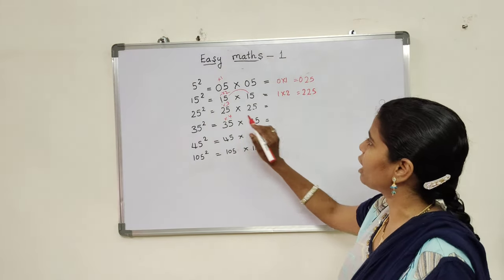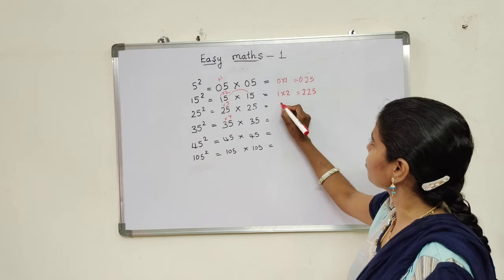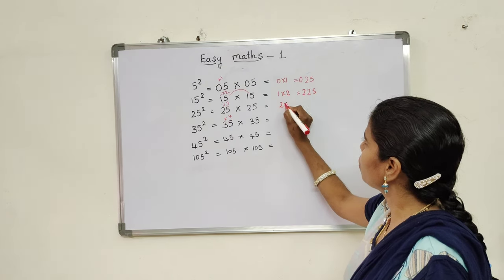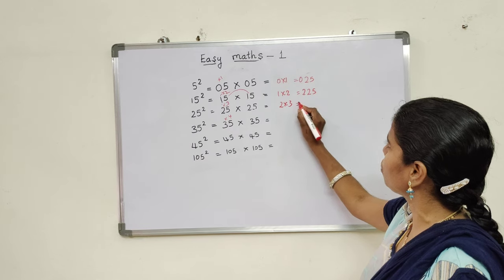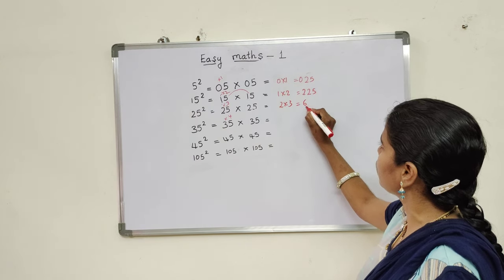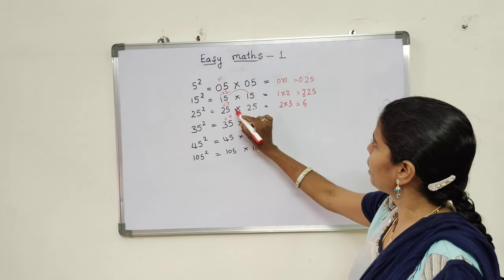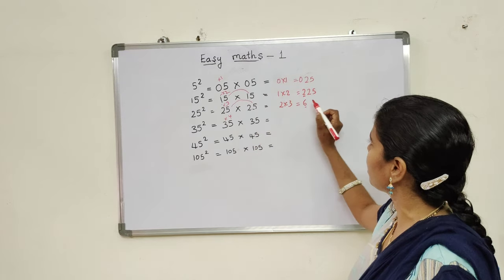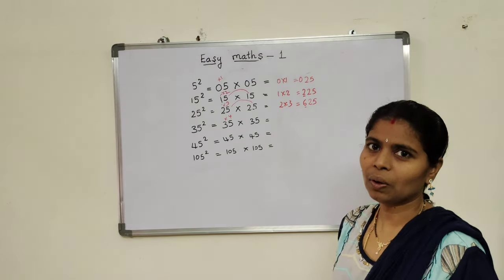Next comes the 25 square. 2 into 3, how much you are going to get? 6. Next, simply again, you should multiply 5 fives are 25.